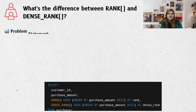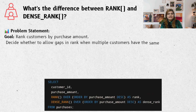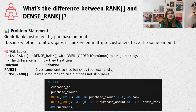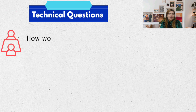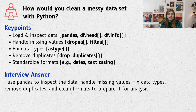Imagine a race where two people tie for second place. RANK would skip the third spot, while DENSE_RANK doesn't skip it — it keeps the ranks tight. Question three: how would you clean a messy dataset using Python? It's just like tidying your room — removing duplicates, fixing missing values, and making sure everything is in the right format.